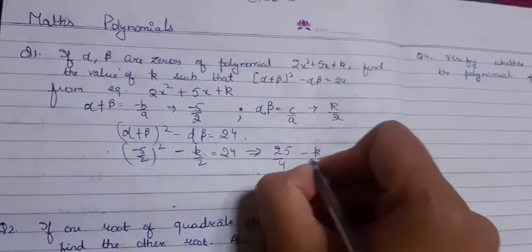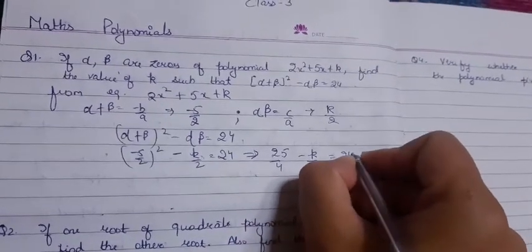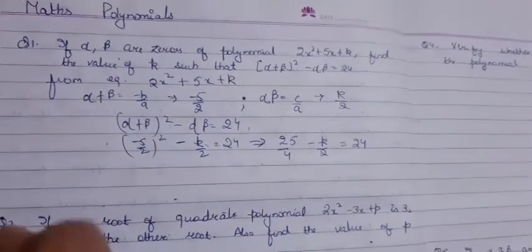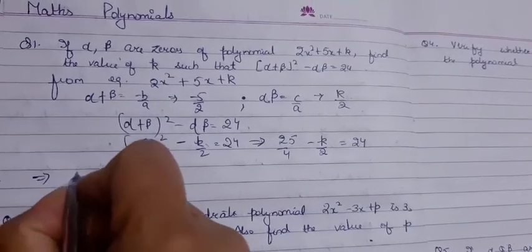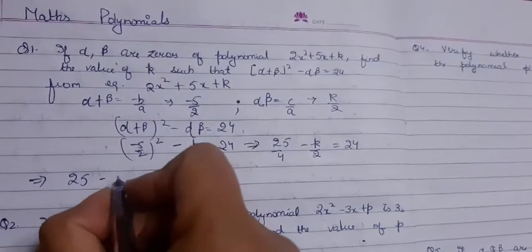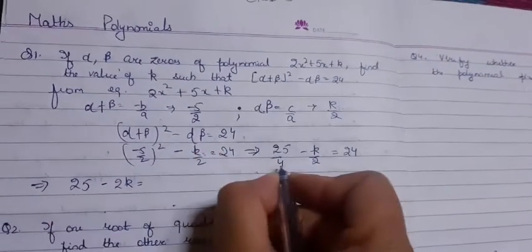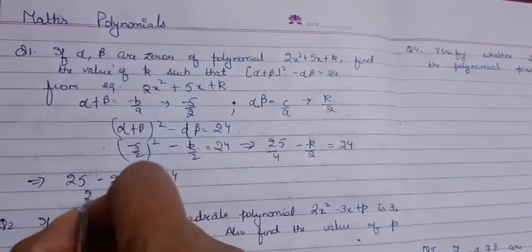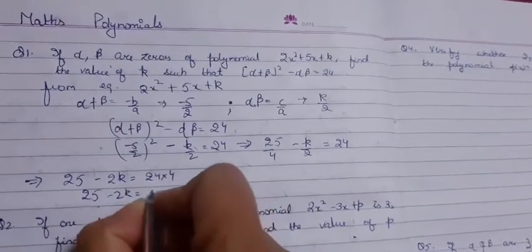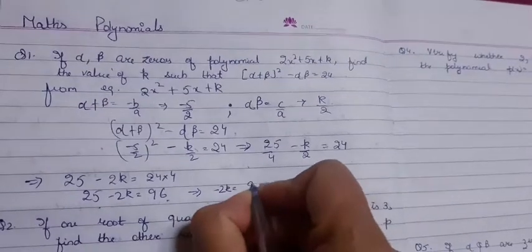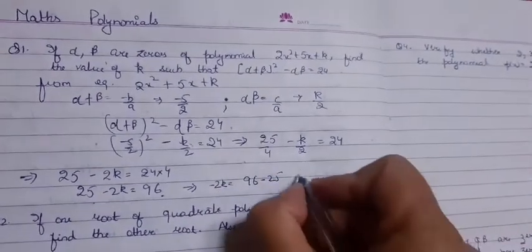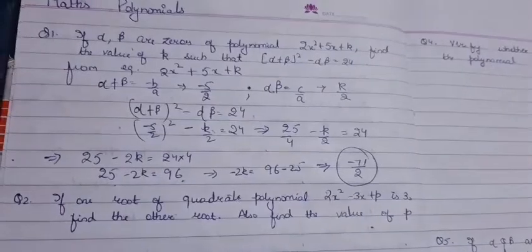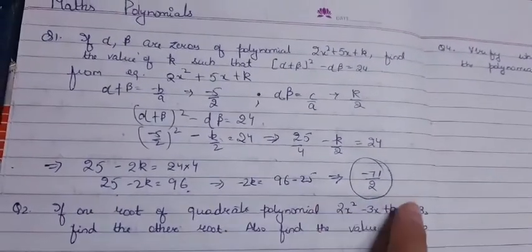Taking LCM, we get (25 - 2k)/4 = 24, so 25 - 2k = 96. Therefore -2k = 96 - 25 = 71, and k = -71/2.